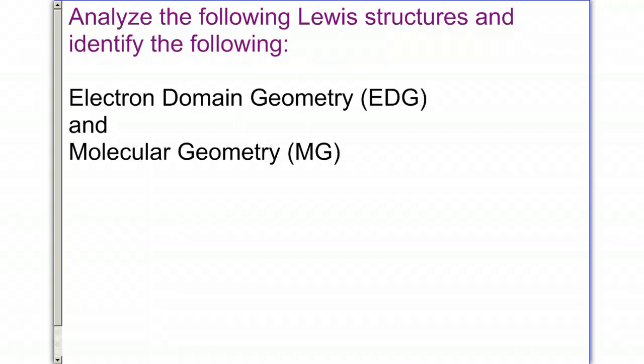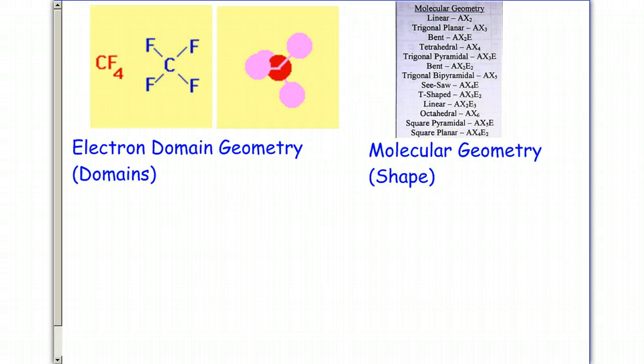To continue section 5, this is section 5b. I'm going to give you several Lewis structures and we're going to identify the electron domain geometry and the molecular geometry for each.